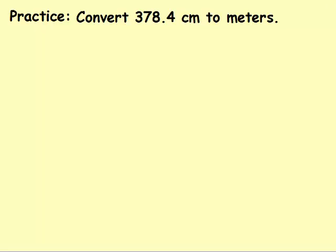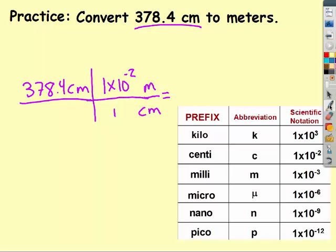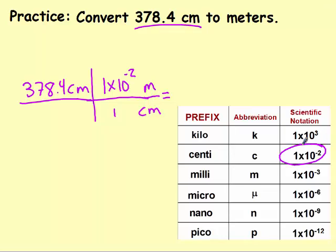Let's try one more together. We're going to start with what they gave you. Whatever unit given has to go in the bottom. What we're converting to goes on top. One centimeter is 1 times 10 to the negative 2 meters. So again, I'm getting that from here. Centi is 1 times 10 to the negative 2.